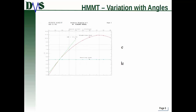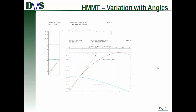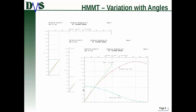Here's a righting arm curve with a constant heeling arm — it does not change with the heel angle. Here's an example with the cosine function defined; you can see how it drops off with the cosine of the function. And this is a cosine squared curve. So all three of those are options for your heeling moment.